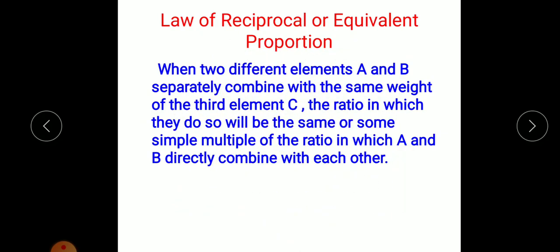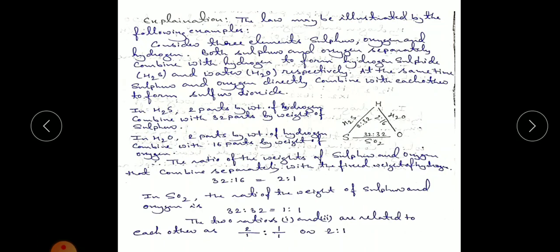Next we have the law of reciprocal or equivalent proportion. When two different elements A and B separately combine with the same weight of a third element C, the ratio in which they do so will be the same as, or a simple multiple of, the ratio in which A and B directly combine with each other. We'll take the example of hydrogen, oxygen, and sulfur. Sulfur reacts with hydrogen to form hydrogen sulfide (H₂S), oxygen reacts with hydrogen to form water, and sulfur and oxygen can also combine to form sulfur dioxide (SO₂).